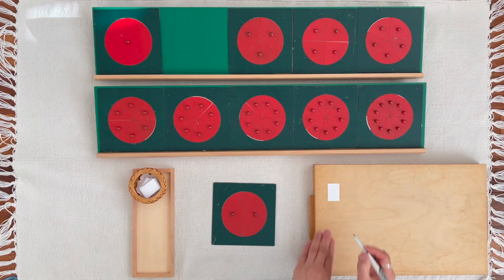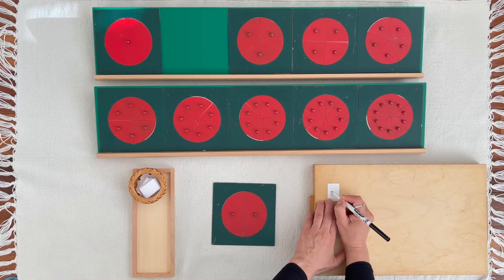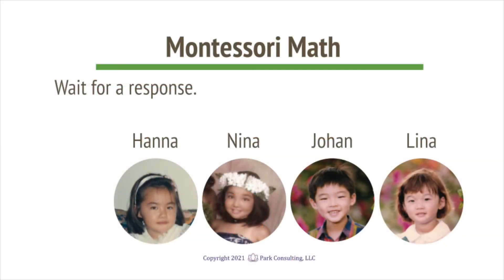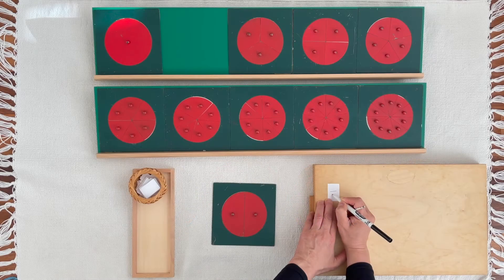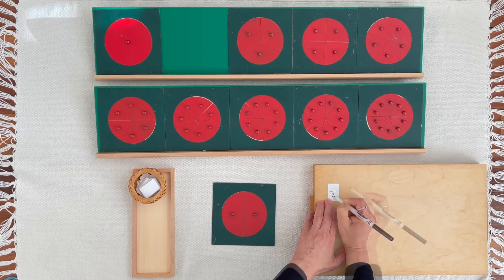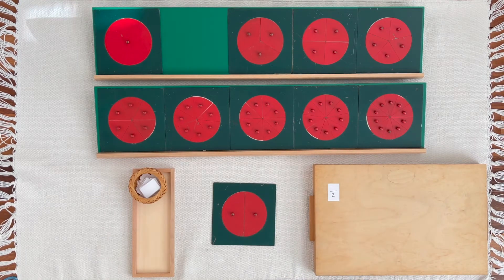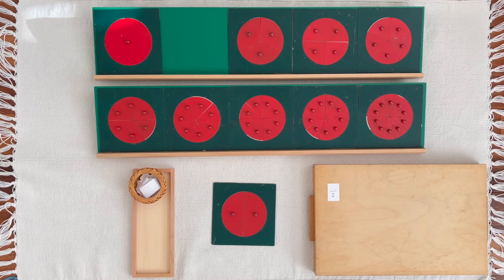How many parts is this circle divided into? Yes, this circle is divided into two parts. Two is the family name because there are two equal parts of this circle.